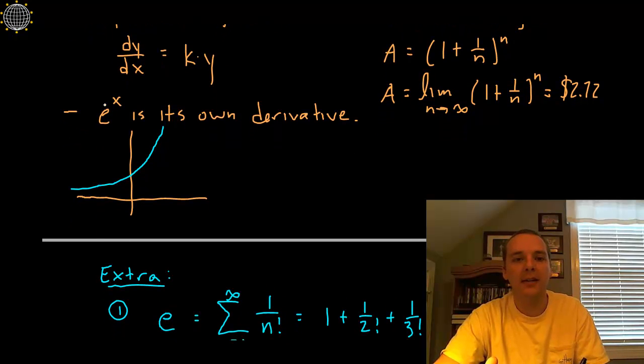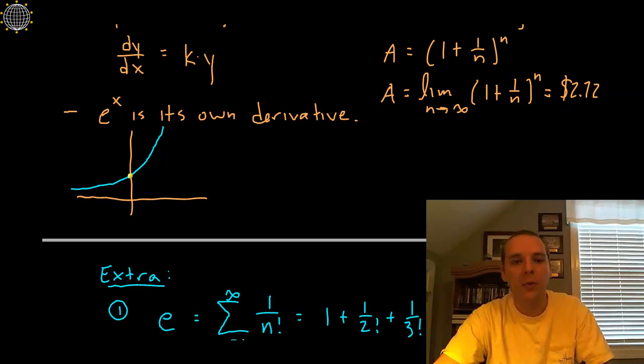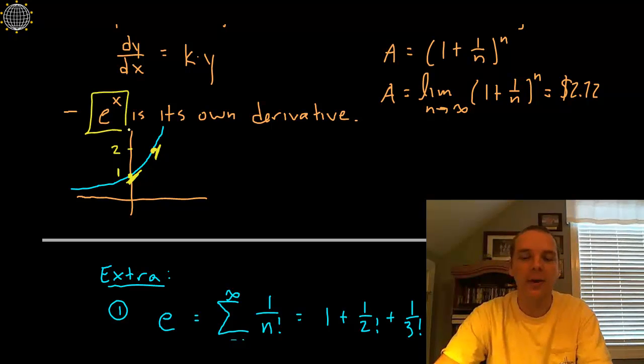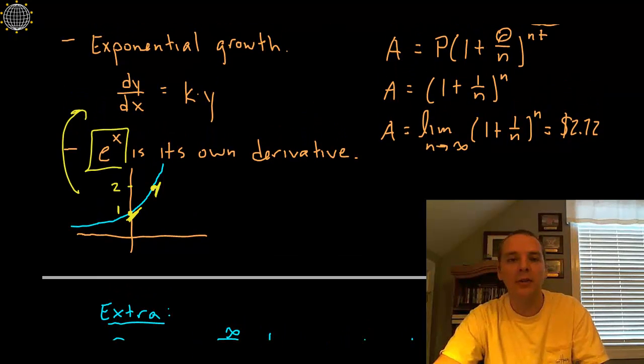This exponential function e to the x has this amazing property that it's its own derivative. You can see that based off the graph right here: where the y value is 1, if you look—and you have to take my word for this—the slope is 1. If you look right here where the y value is 2, well the slope is steeper, it's actually 2, and so on and so forth. e to the x—not 2 to the x or 5 to the x or 10 to the x—e to the x is the only function that does that. It's this amazing property.